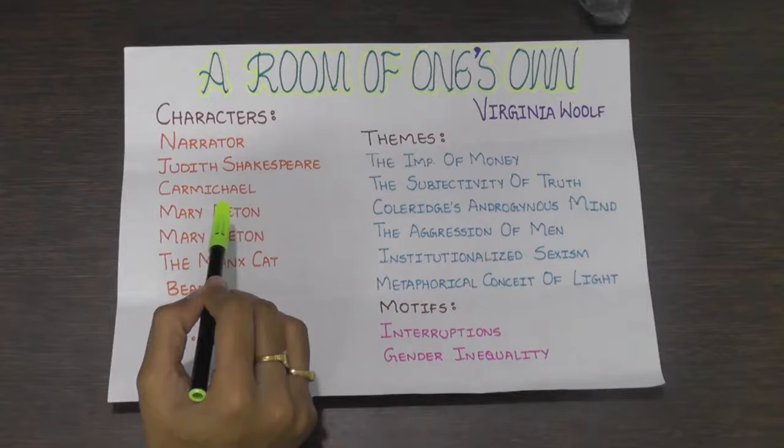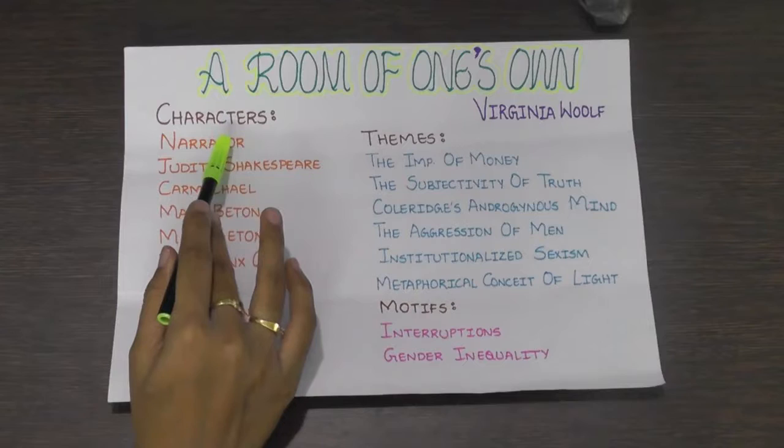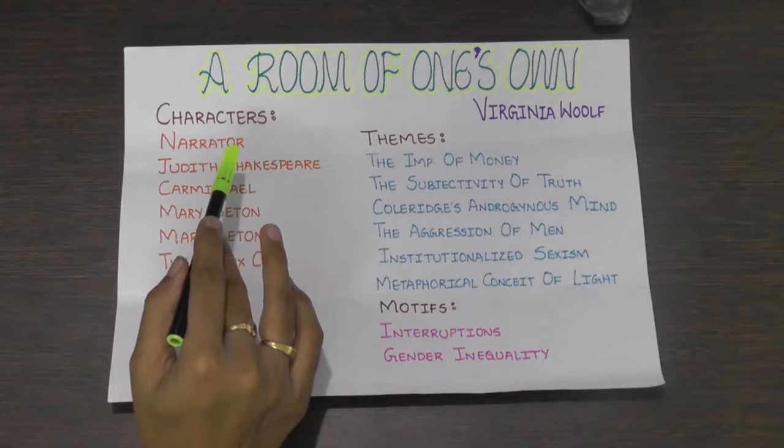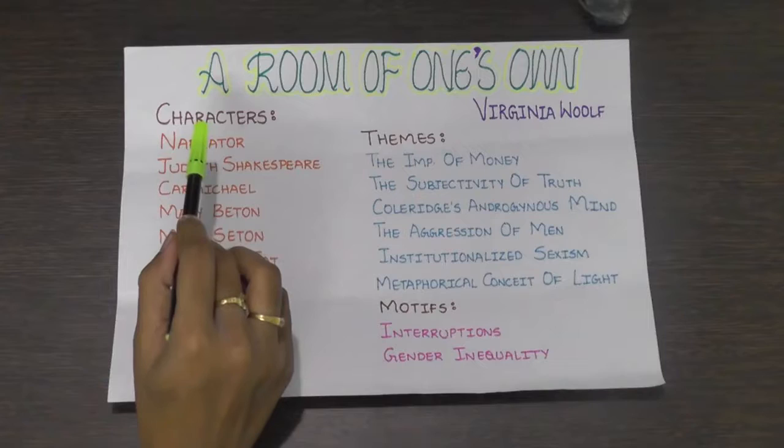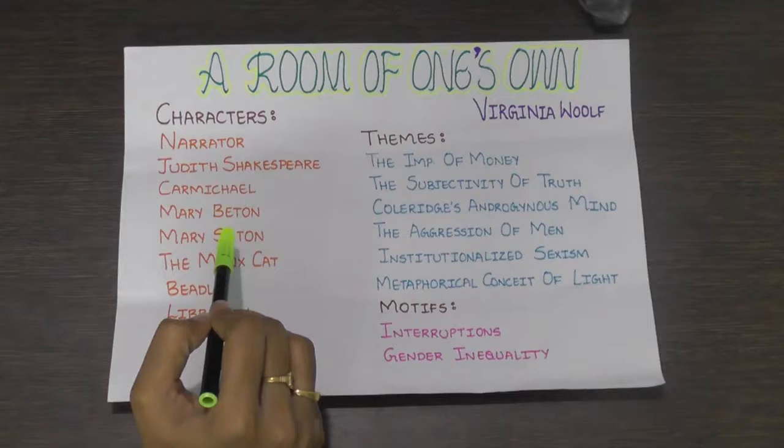Mary Betten is Woolf's aunt, whose name Woolf attributes to the narrator. She bequeathed the narrator 500 pounds a year upon her death. This inheritance allows the narrator to maintain her independence and helps her express her talent.